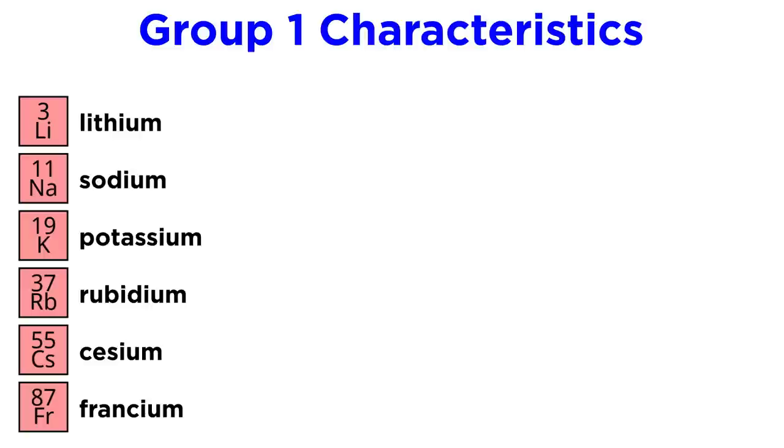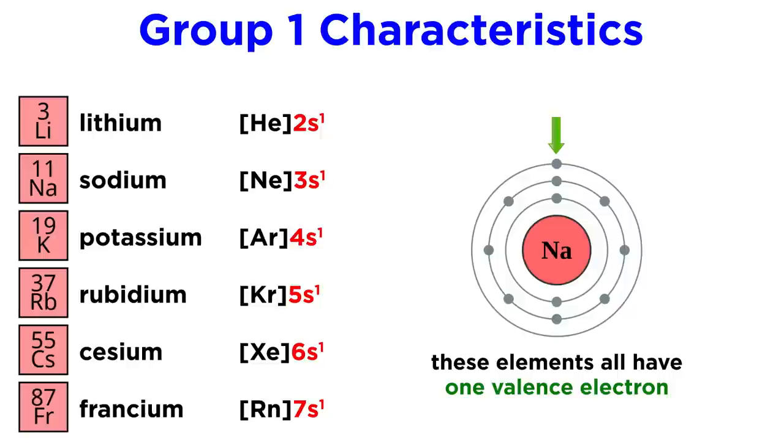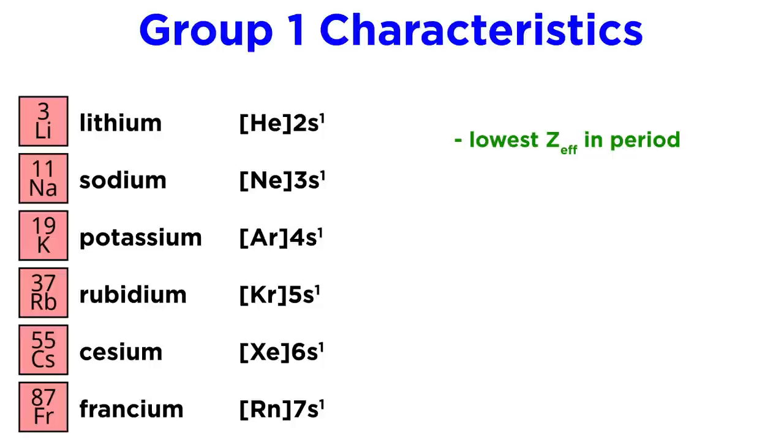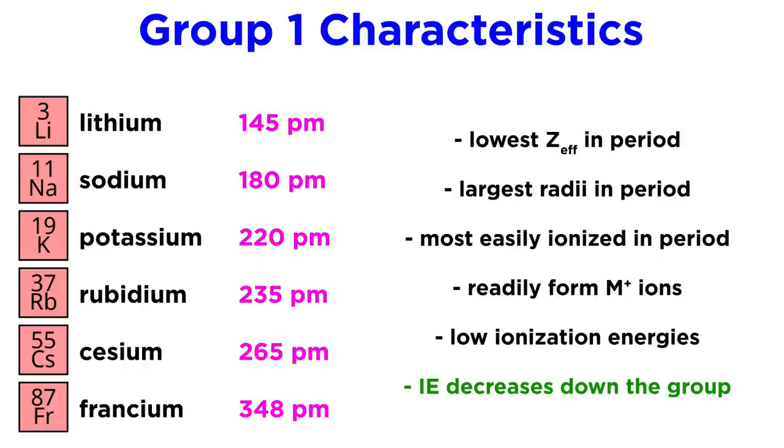We should of course be quite familiar with the patterns inherent in the periodic table already, so we know that what these elements have in common is that their electron configurations end in NS1, meaning that their outermost shells are populated by one lone S electron. Because they all have only one valence electron, they share similar properties, namely that they have the lowest Z-effective in their respective periods. They have the largest atomic radii in their respective periods. They are the most easily ionized elements in their periods, readily forming M-plus ions, meaning that they have very low ionization energies, and this value gets lower moving down the group, as the atomic radius gets bigger due to adding additional shells, and the valence electron gets farther and farther from the nucleus.